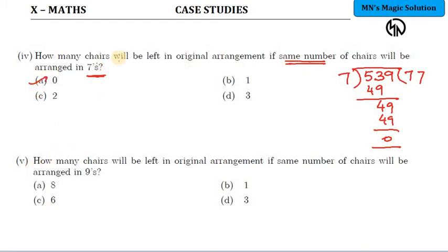So the answer is 0. How many chairs will be left? That is the question. 539 is exactly divisible by 7. So when 539 chairs are arranged in groups of 7s, 77 groups of people can sit and the remaining number of chairs will be just 0.